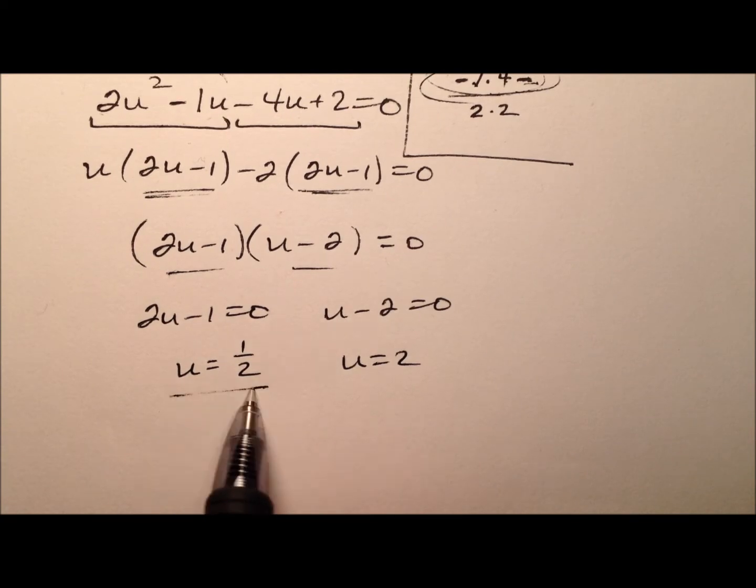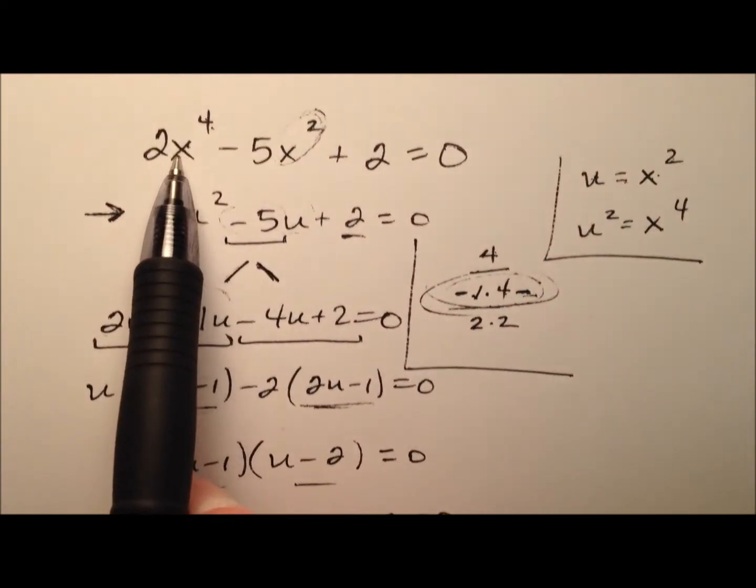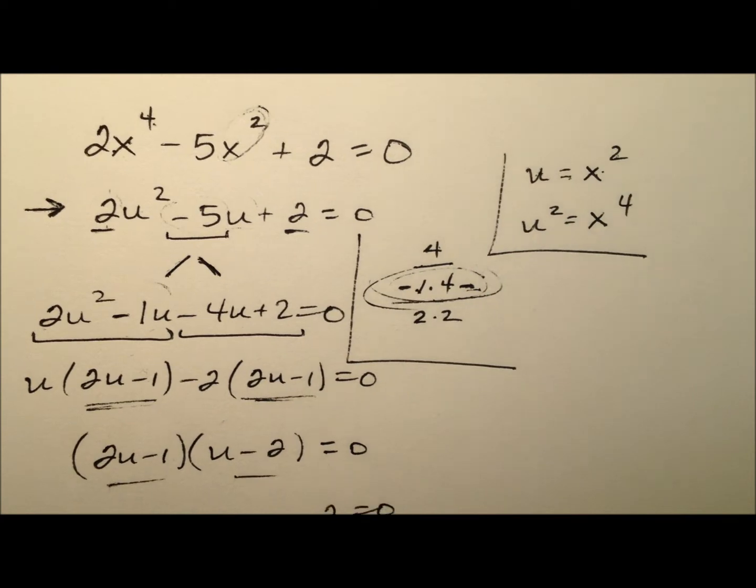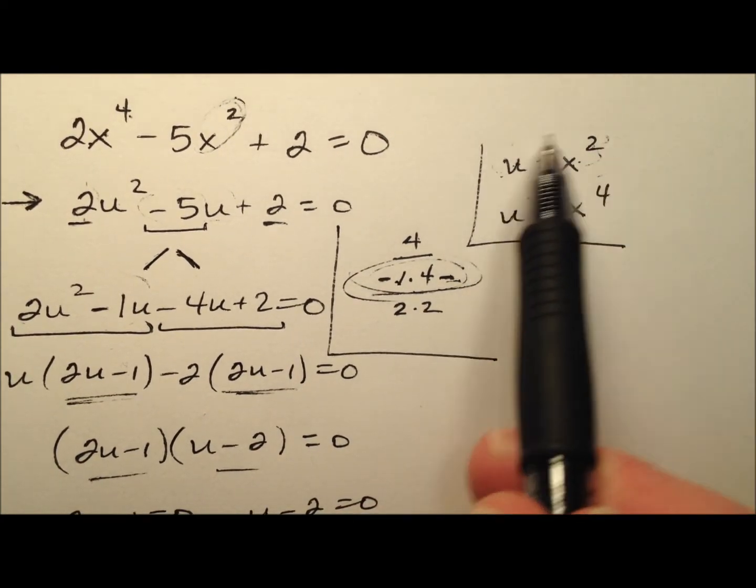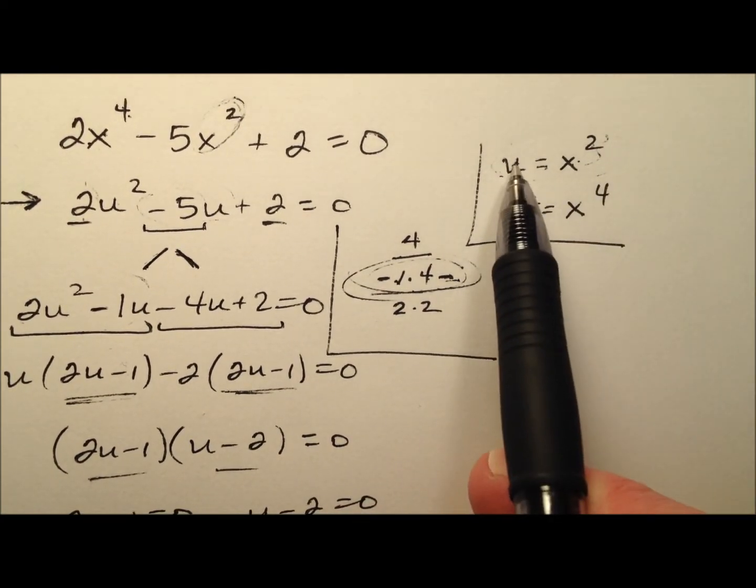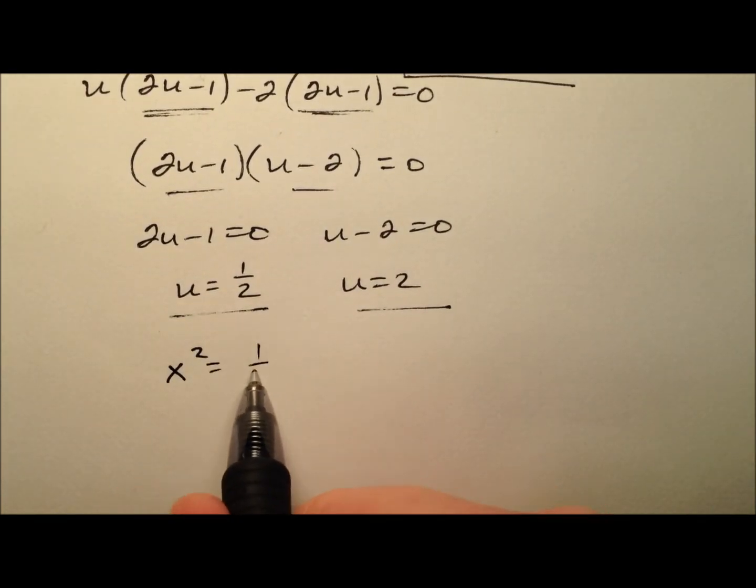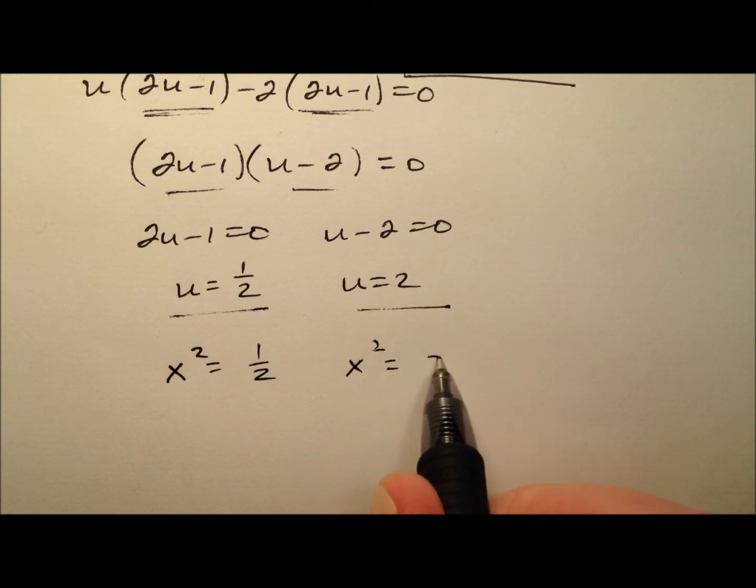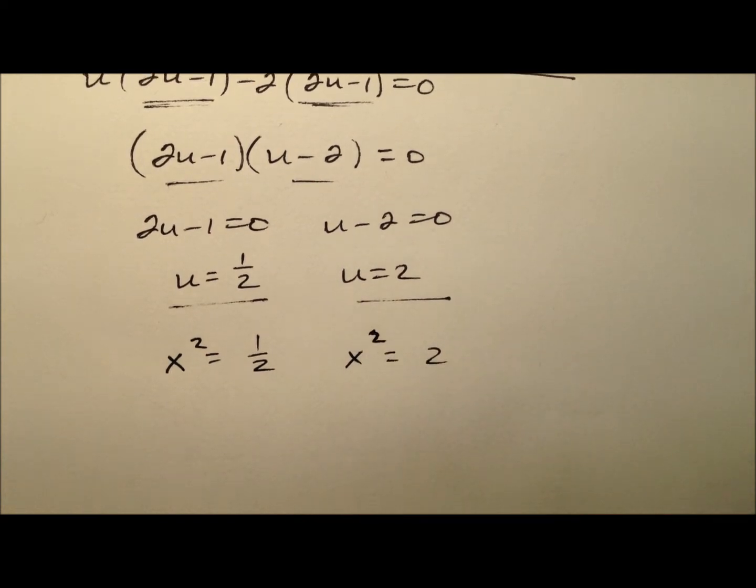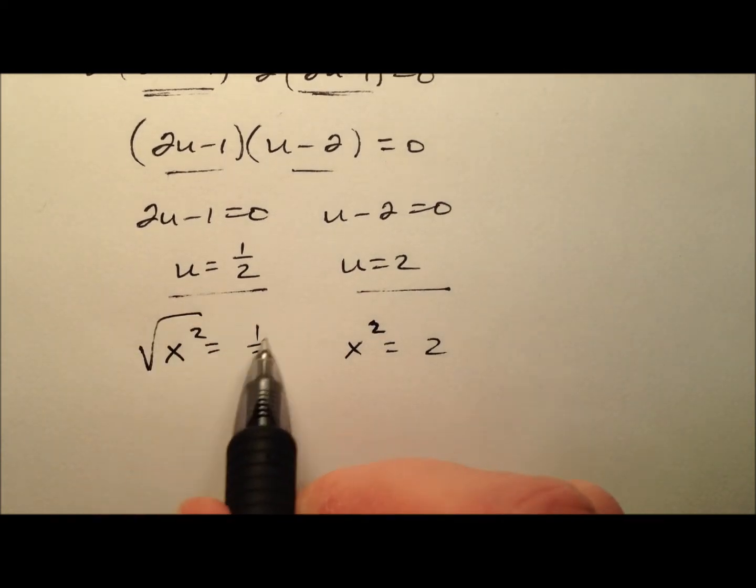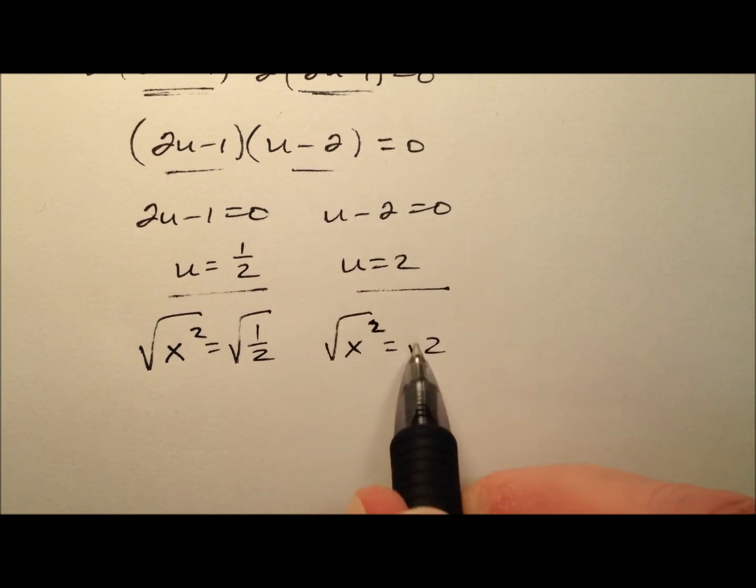But these are values of u, not x. So I'm going to back-substitute here. I know my u was x squared. So I'm going to say x squared is one-half and x squared is 2.